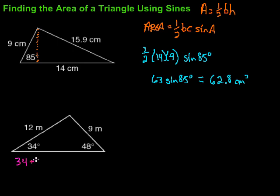So I have 34 plus 48. That's going to give me 34 plus 48 would be 82. Then I'm going to subtract that from 180. So 180 minus 82, which is going to give me 98. So now I know this angle measure is 98 degrees. Okay. Now I can grab that formula.